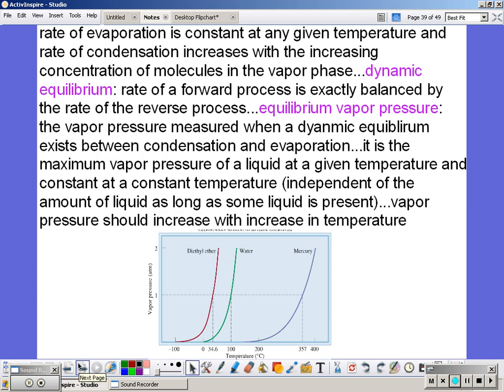The rate of evaporation is constant at any given temperature, and the rate of condensation increases with the increased concentration of the molecules in the vapor phase. So dynamic equilibrium, the rate of the forward process is exactly balanced by the rate of the reverse process. So you can't actually see a change in your volume of liquid.